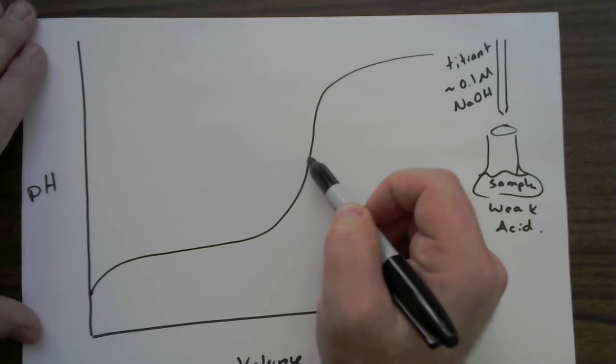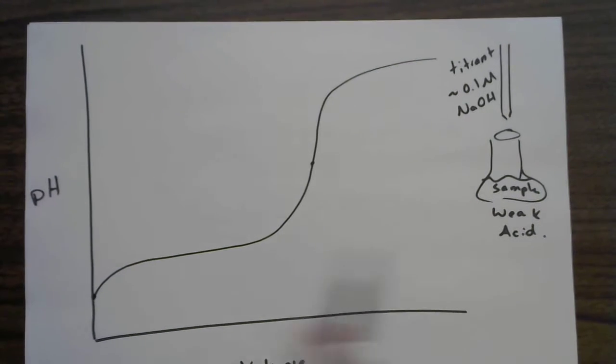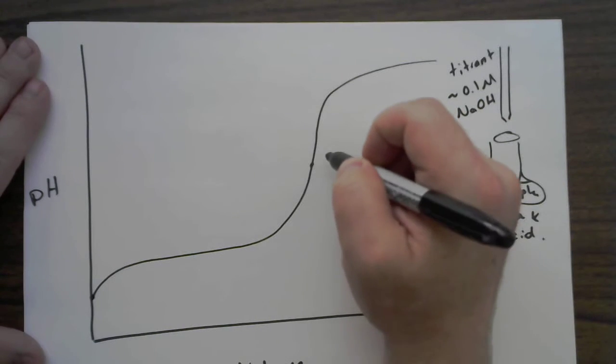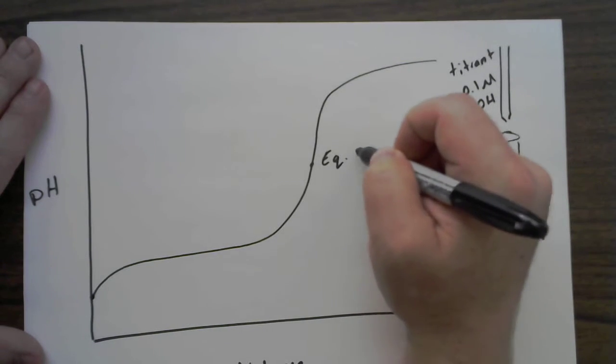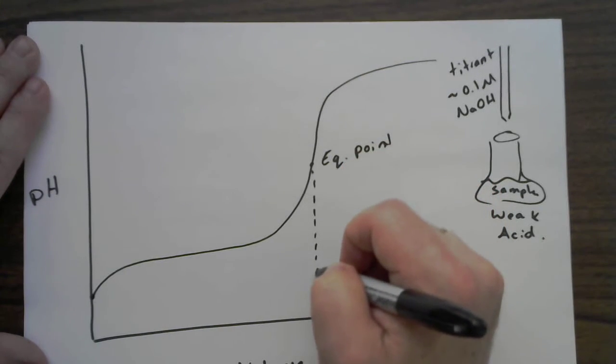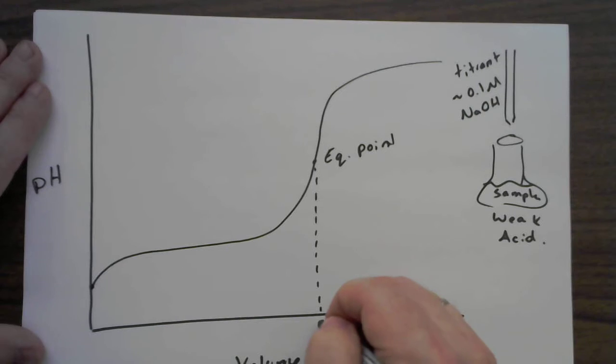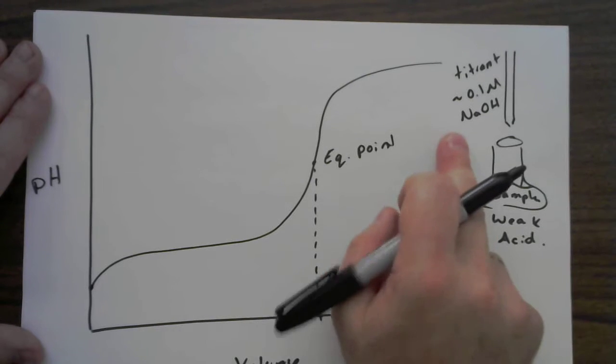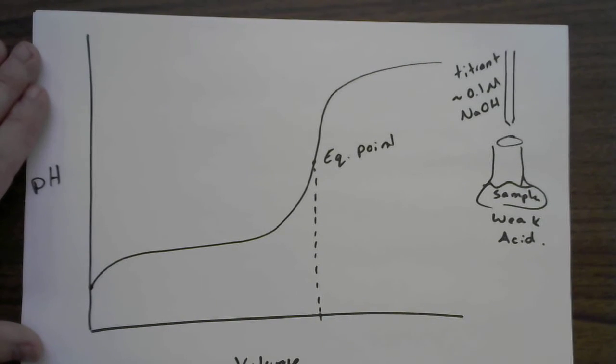But if you have a full titration curve in front of you, it's amazing what you can really walk away with. So I'm going to say that this is like the starting pH that we're going to have here. I'm going to show my little kick up. This is going to go up like that. So there I've drawn my full titration curve. This point here where you see the steepest increase in pH, that is going to be representative of the equivalence point.